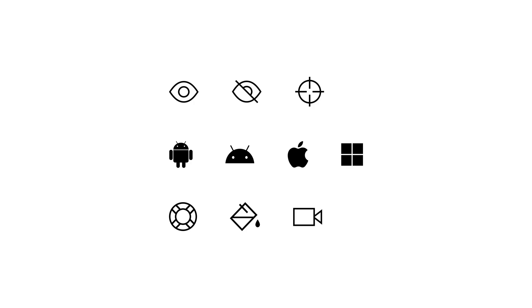UIKit's icon library got a small update as well. We added 7 new icons: i, i slash, and crosshairs, as well as Android, Android Robot, Apple, and Microsoft. We also updated the lifesaver, paint bucket, and video camera icons to fit the overall UIKit outline style.